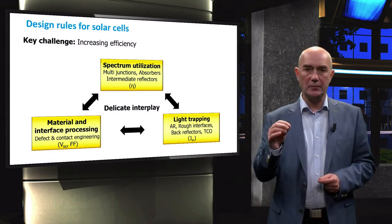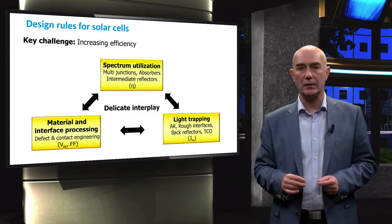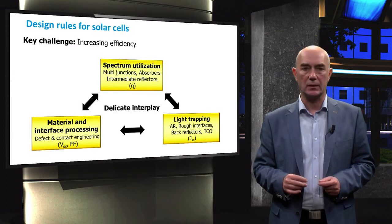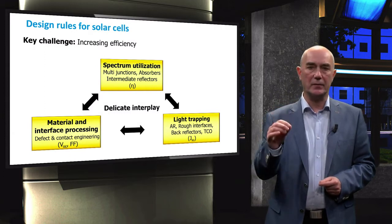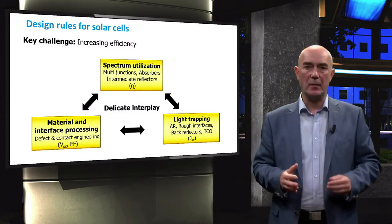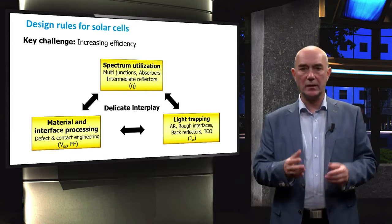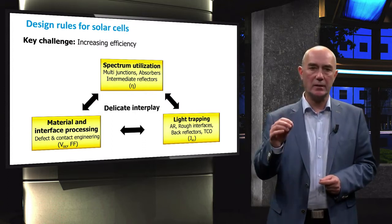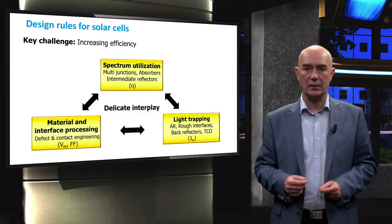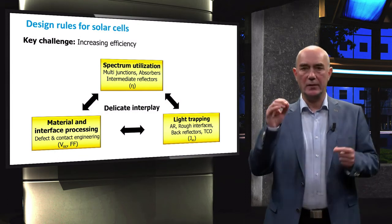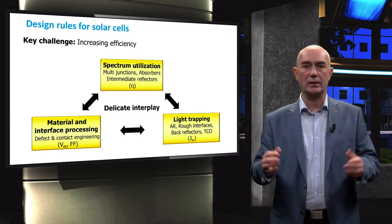The quality of materials and interfaces determines the bandgap utilization of absorbers and the fill factor. As we learned from the previous video, the open circuit voltage is directly related to the bandgap utilization. The recombination processes in the bulk of materials and at their interfaces decrease the amount of photo-generated charge carriers. Defects and contacts that result in series and shunt resistances also lower performance of solar cells. Therefore, defect elimination is one of the most important areas in solar cell engineering.